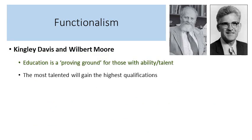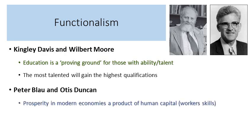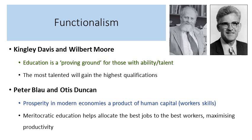Continuing with Davis and Moore, education is therefore a proving ground for those with ability and talent — a way for people to show what they're capable of — and the most talented will gain the highest qualifications and be prepared for those difficult jobs. Blau and Duncan argued that prosperity in modern economies is a product of human capital — workers' skills. Meritocratic education helps allocate the best jobs to the best workers and thus maximises productivity, making sure the right people are in the right jobs and increasing prosperity for everyone in society.